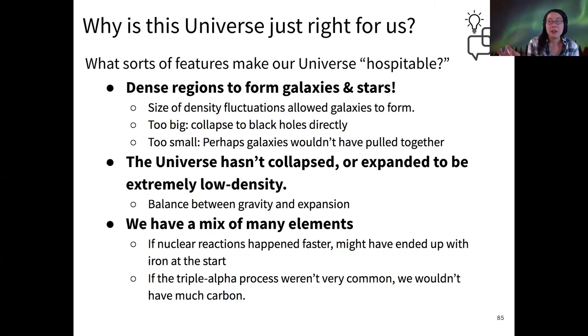If the density fluctuations in the cosmic microwave background were too big, then it could have been that there would be too much mass in each one, and so it would just collapse into a black hole directly instead of forming a galaxy first. And if those clumps of matter were too small, then it might be possible that you wouldn't have enough mass for galaxies to pull together.